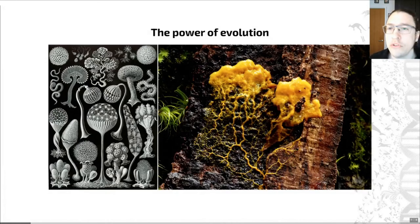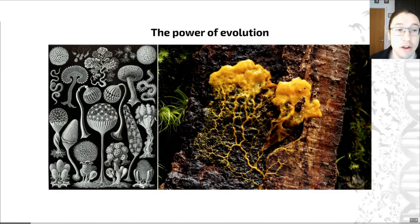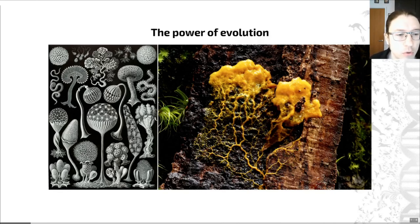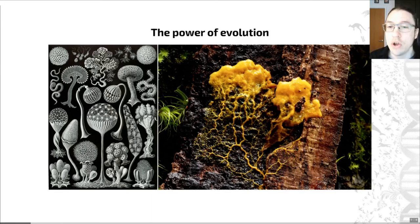I wanted to start with just one of a huge number of examples of how complex and impressive the outcomes of evolution can be. The one I've chosen is based on organisms called slime molds. These are a group of organisms closely related to fungi, plants, and animals, and they're really, really cool. You can see a 19th-century illustration of these on the left-hand side of the slide by Ernst Haeckel, and a photograph of a slime mold in action on the right. Their life cycles are a really good example of how complex the results of evolution can be.